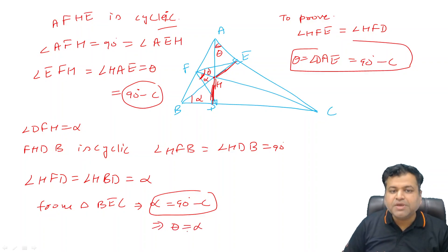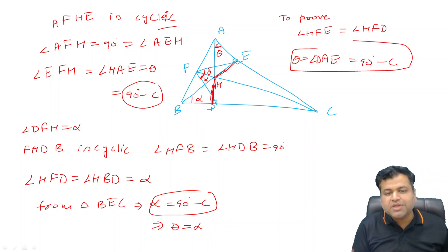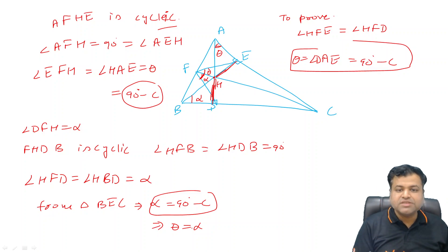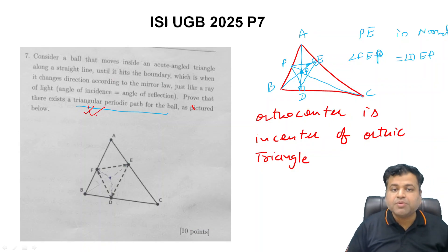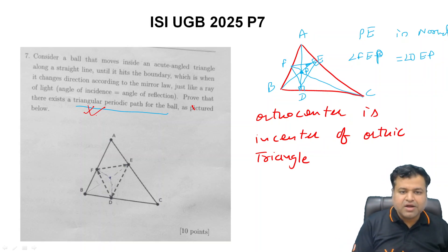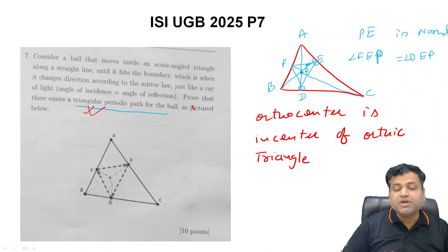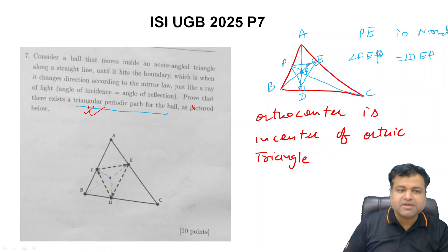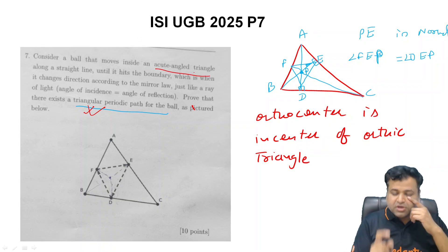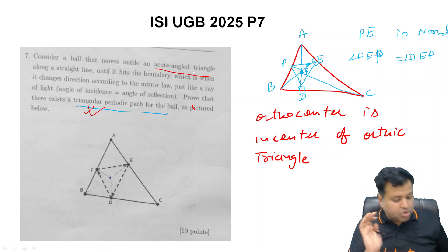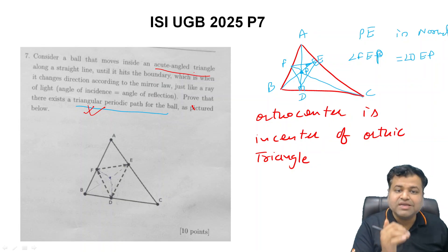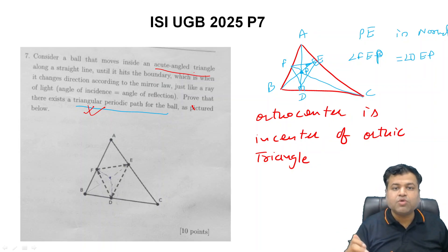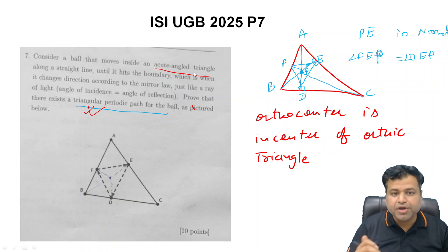Since theta equals alpha, HF is the angle bisector of angle DFE. Similarly, HE is the angle bisector and HD is the angle bisector — so H is the incenter of triangle DEF. Therefore DEF is the required triangular periodic path. The path lies inside the triangle because the triangle is acute-angled, which guarantees the orthocenter lies inside the triangle.